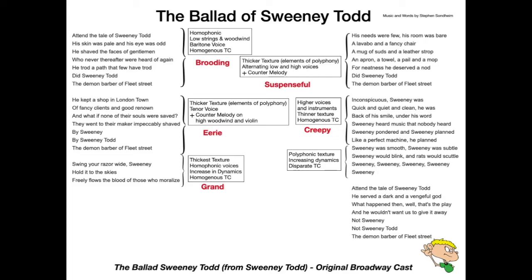And here's the exciting bit: a layering of lines — polyphonic texture — with increased dynamics and disparate tone colours. Nothing's quite matching. Very frantic. And then we have an antiphonal texture: a call, a response, another call, a response. Homogenous — sounding like a unified ensemble — with some sort of religious element to it. Then we end with a homophonic texture, back to our melody and accompaniment, giving us that brooding sense again.